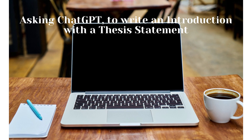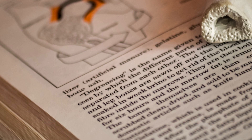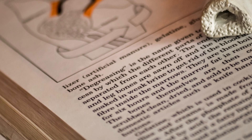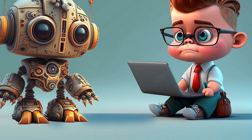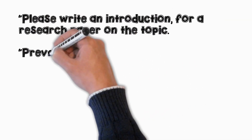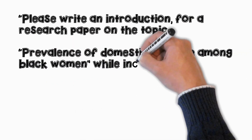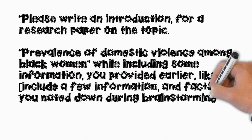Asking ChatGPT to write an introduction with a thesis statement. Now that we have our outline, let's move on to the introduction and thesis statement. The introduction sets the stage for your research paper and hooks your readers. ChatGPT 4 has the capability to remember the chats, so you can ask it to add a few topics that you generated during the first stage of idea generation. Simply asking ChatGPT to write an introduction is not plausible. You can use the following prompt instead: 'Please write an introduction for a research paper on the topic: Prevalence of domestic violence among black women, while including some information you provided earlier — include a few facts you noted down during brainstorming — with a proper thesis statement.'